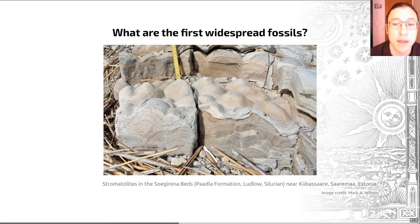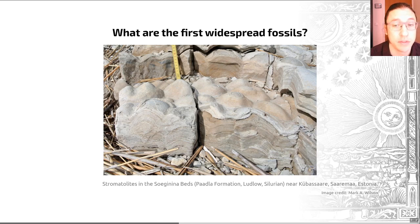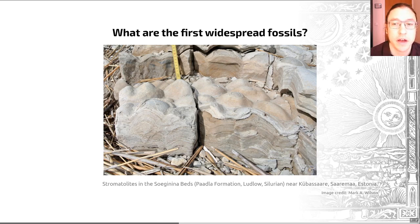Stromatolites are structures that are generally associated with bacterial mats. Some recent papers suggest that stromatolites actually appear really quite early in Earth history.